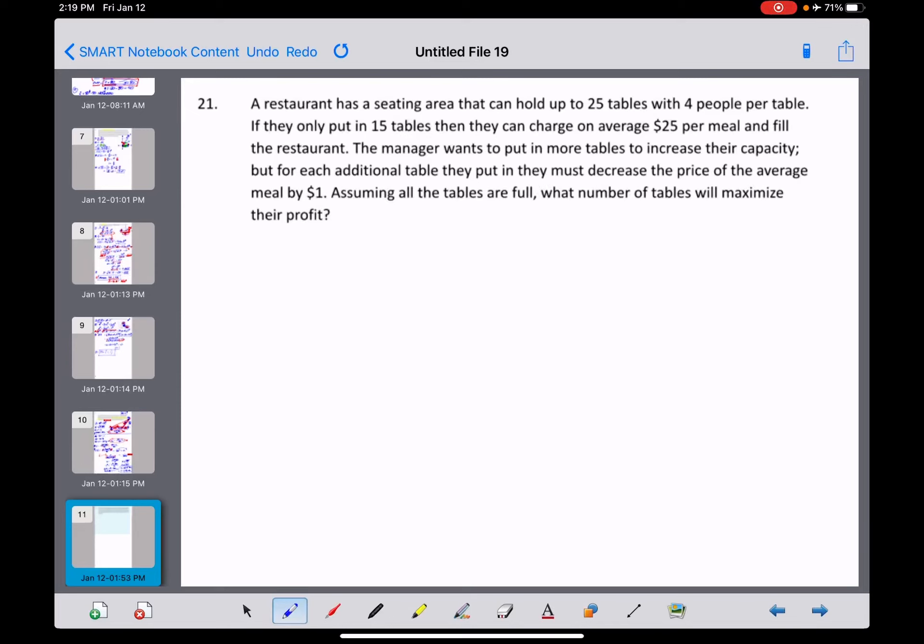Okay, number 21 is a business problem right here. We've got a restaurant with a seating area that can hold up to 25 tables, 4 people per table. So kind of their normal default setting here, they're telling you, is that they put out 15 tables and they average $25 per meal.